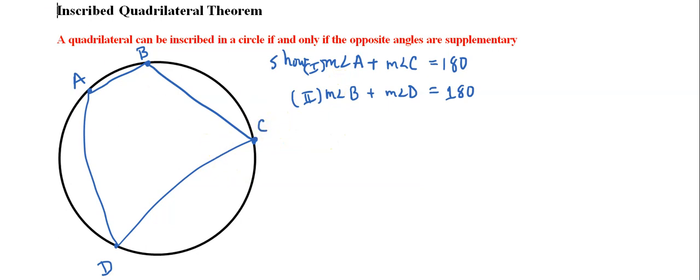So without further ado let's approach this problem. I'm going to use information from the previous theorems on inscribed angles. If you haven't seen that or understood that, please go back and look at those notes. Let's look here at angle A. If we look at this picture, angle A intercepts arc BD.